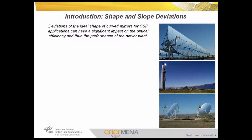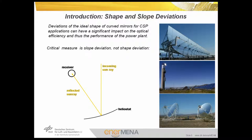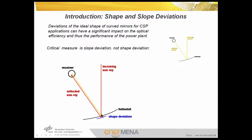Shape errors of the concentrators have a significant impact on the optical efficiency of the systems and thus the performance of the total power plant. The critical measure is the slope deviation and not the shape deviation. For example, if a heliostat has the ideal shape and optimal orientation, the incoming sunray is directly reflected into the center of the aperture. If there is a deviation of the heliostat from its ideal position, the corresponding deviation of the reflected ray is rather small and in the same order of magnitude as the shape deviation.